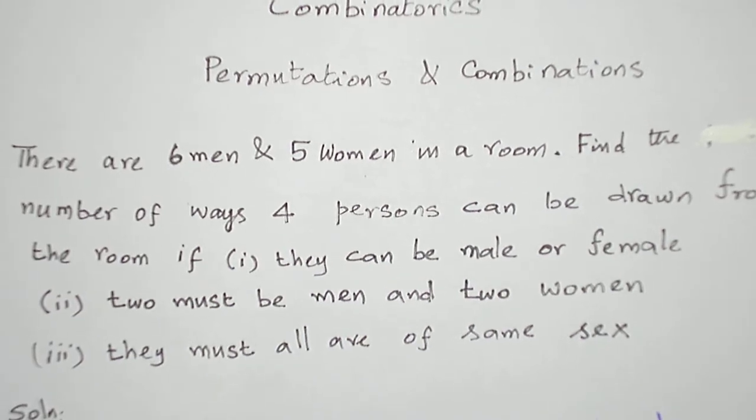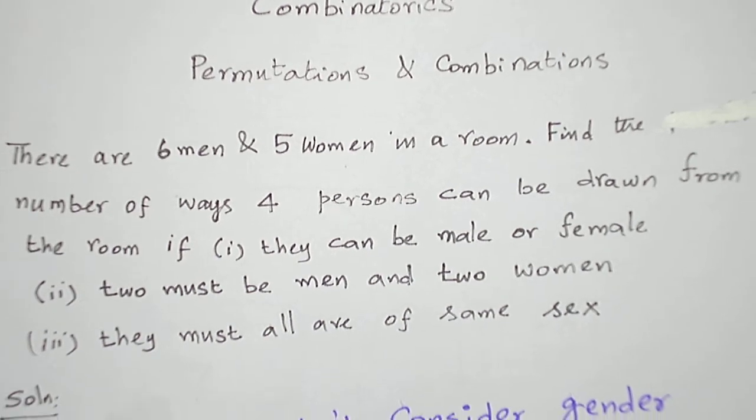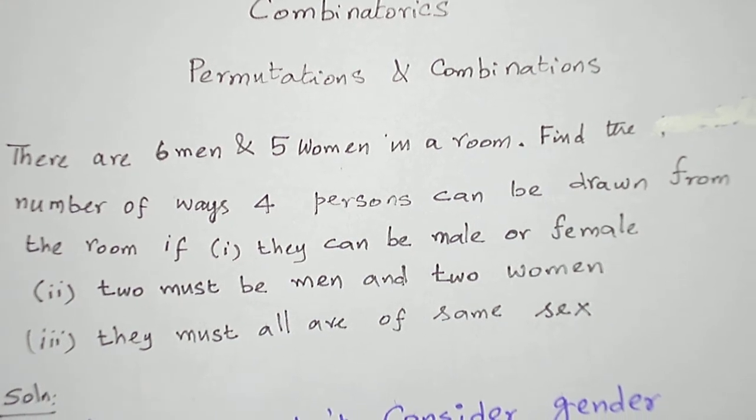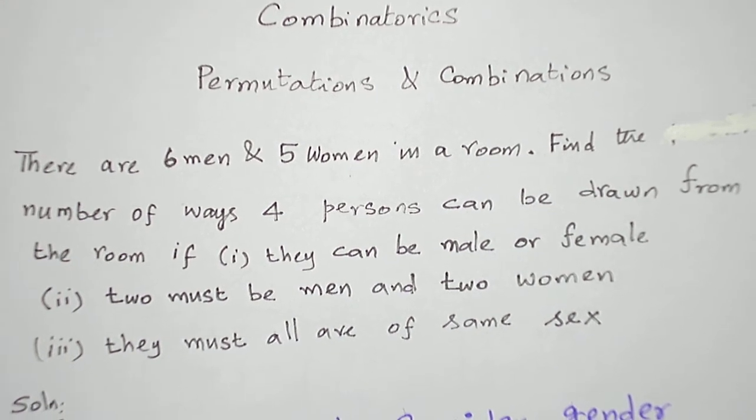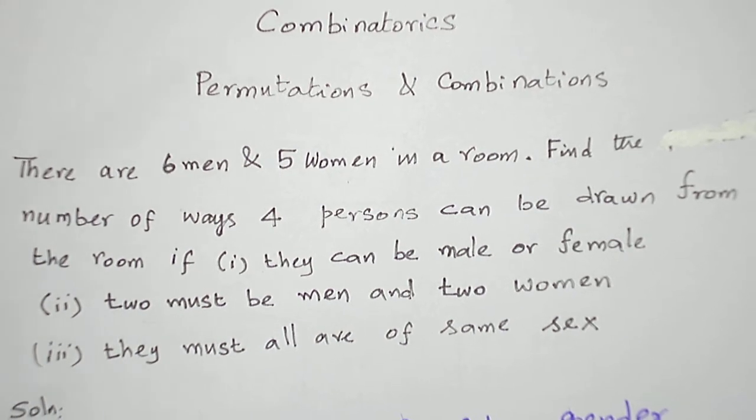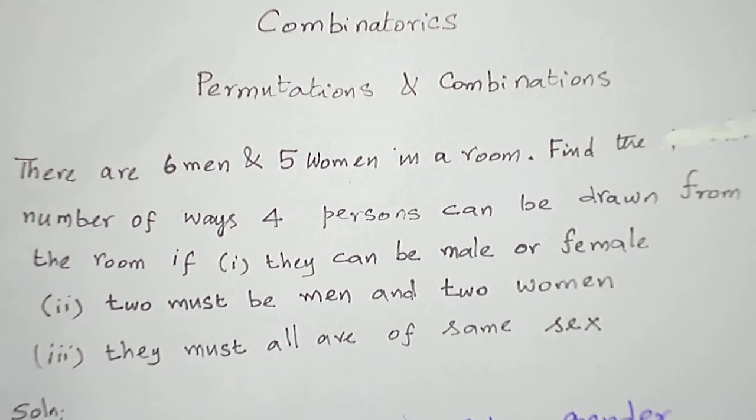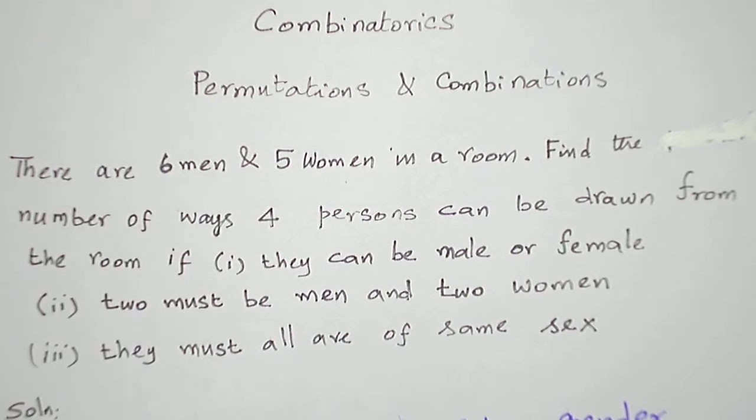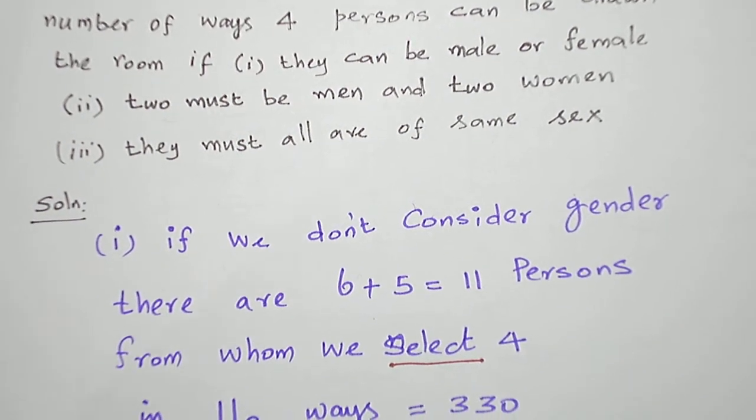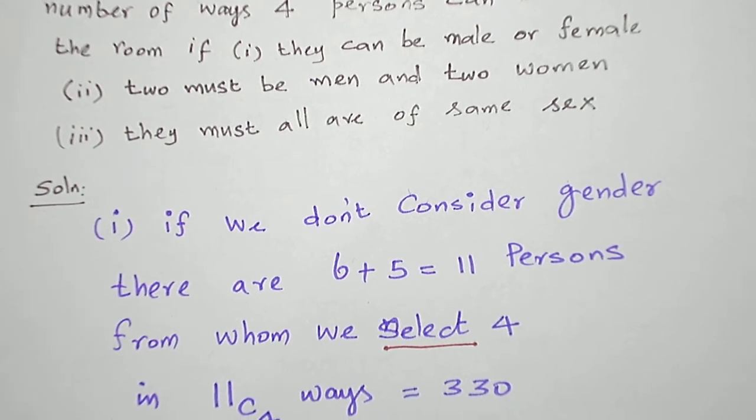Based on these conditions, we have to find the number of ways. Now if we look at the first problem, gender is not considered. If gender is not considered, we see all the men and women as persons. So six men and five women, that's six plus five equals eleven persons without considering their gender.